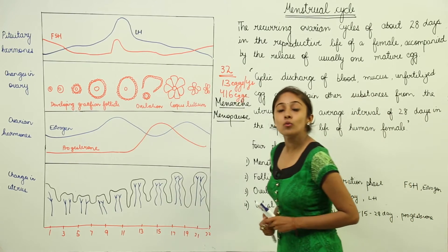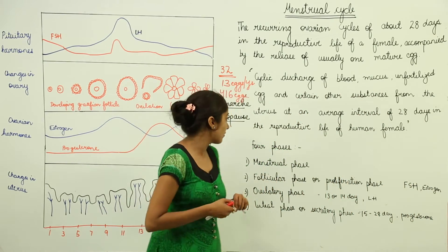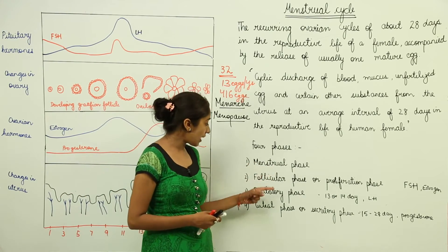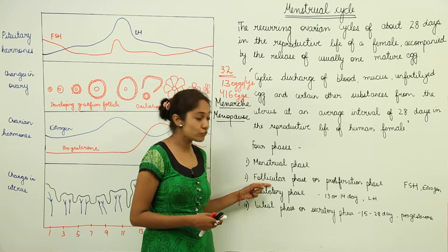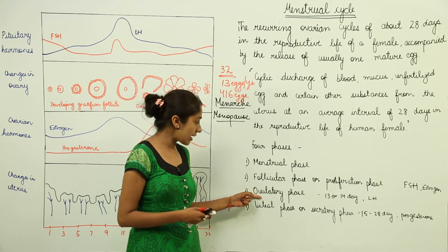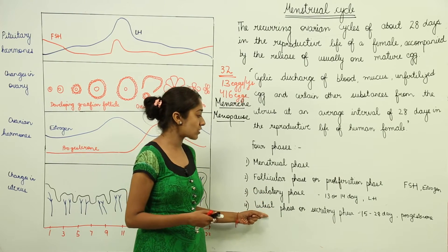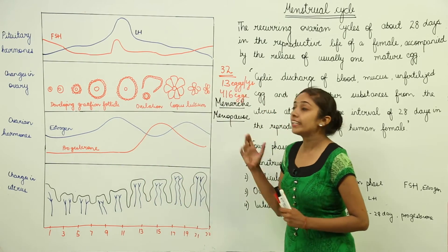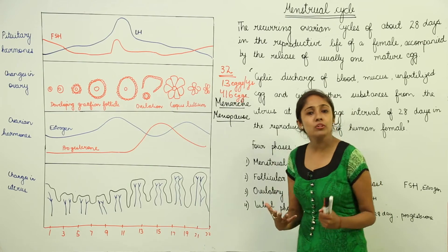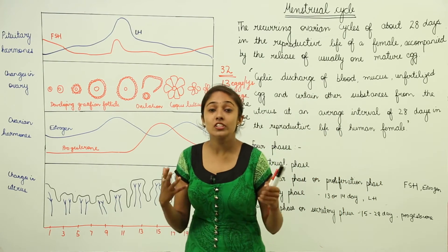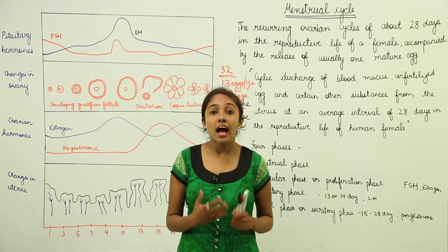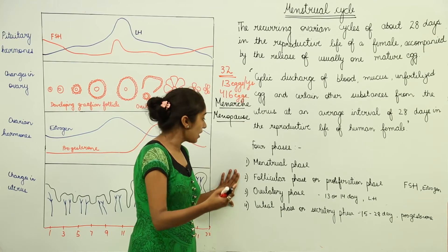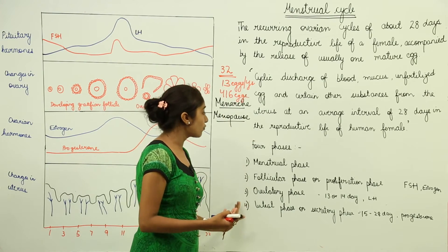The menstrual cycle is divided into four phases: the menstrual phase, the follicular phase or proliferation phase, the ovulatory phase, and the luteal phase or secretory phase. These four phases occur during the 28 days. There are hormonal changes, changes in the ovary and follicle, and changes in the uterine wall.